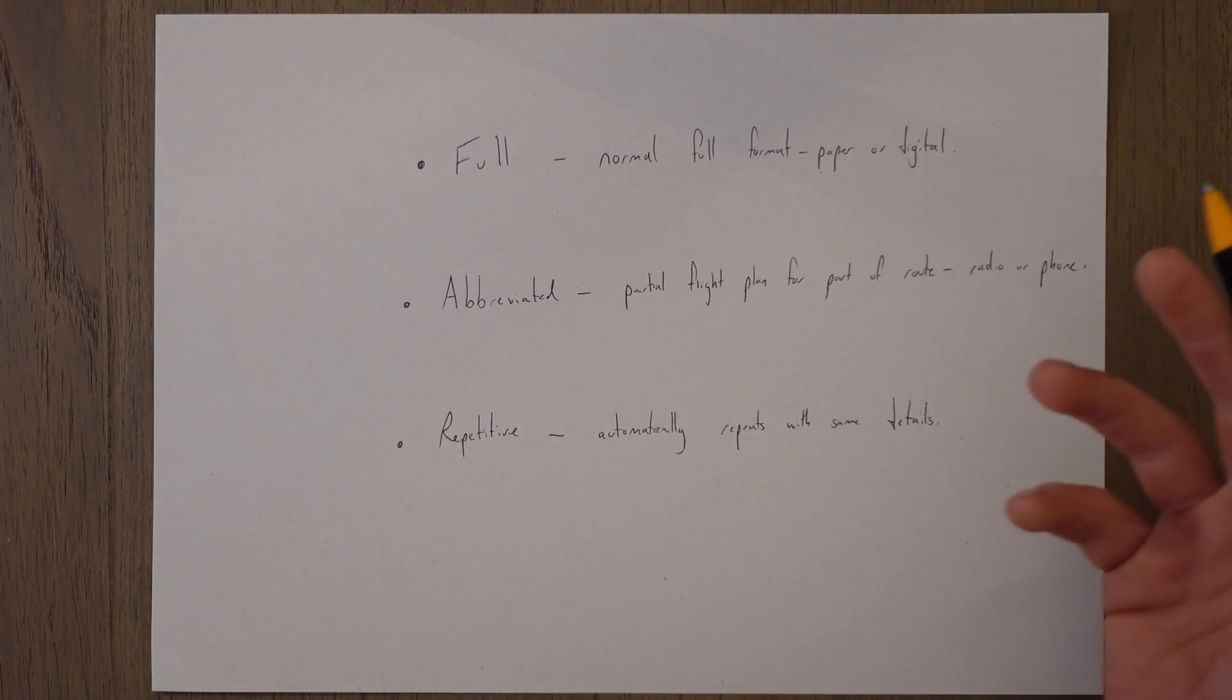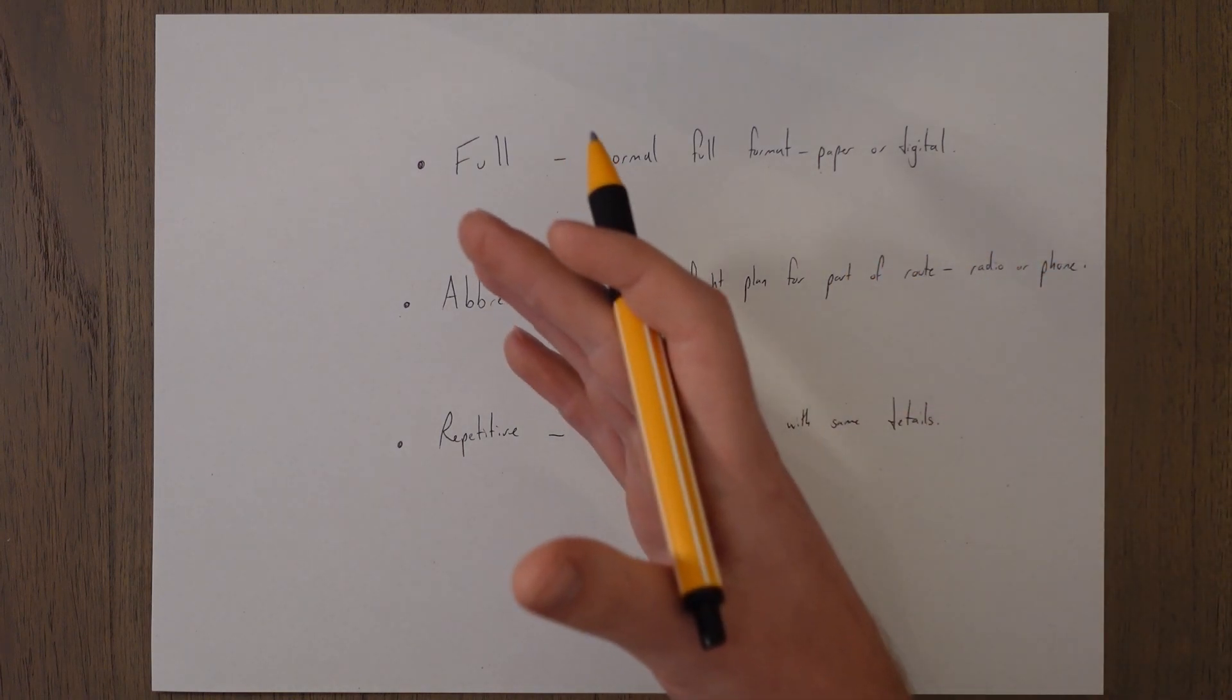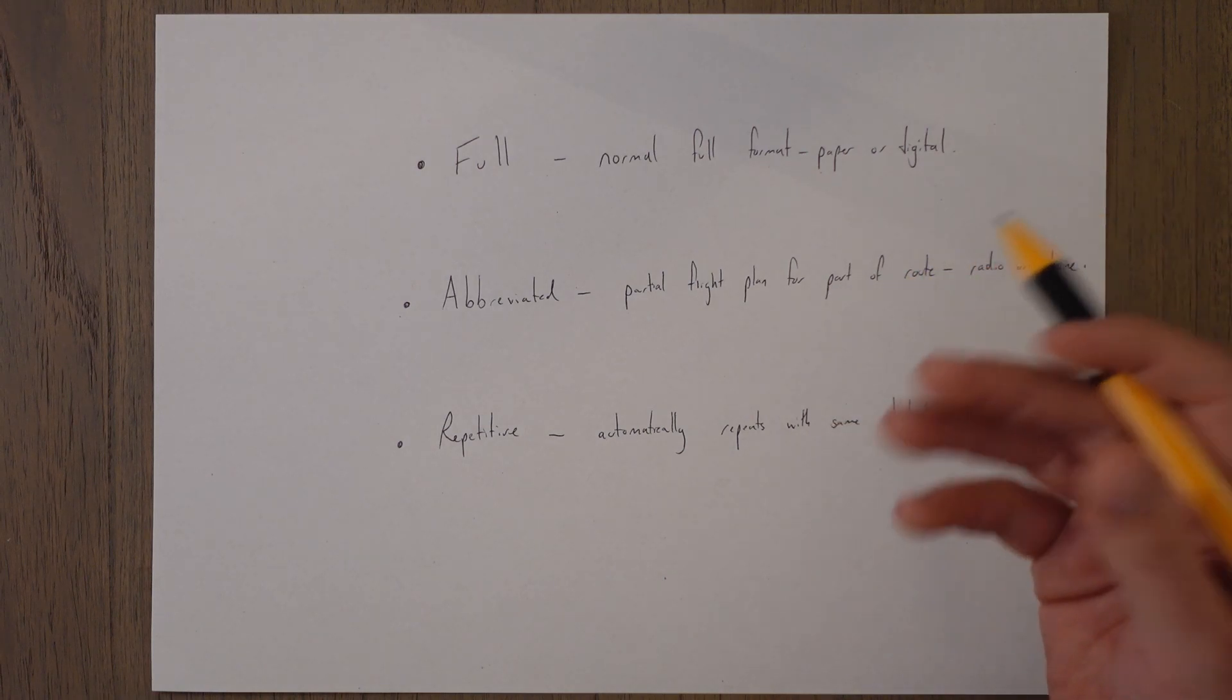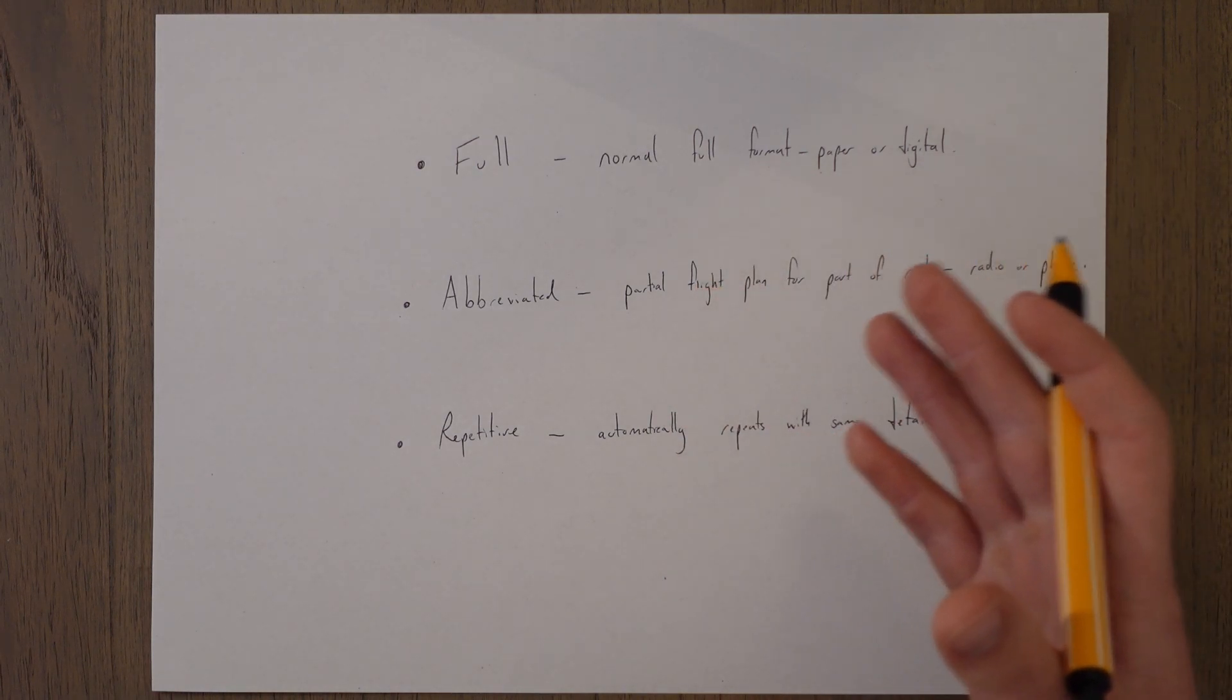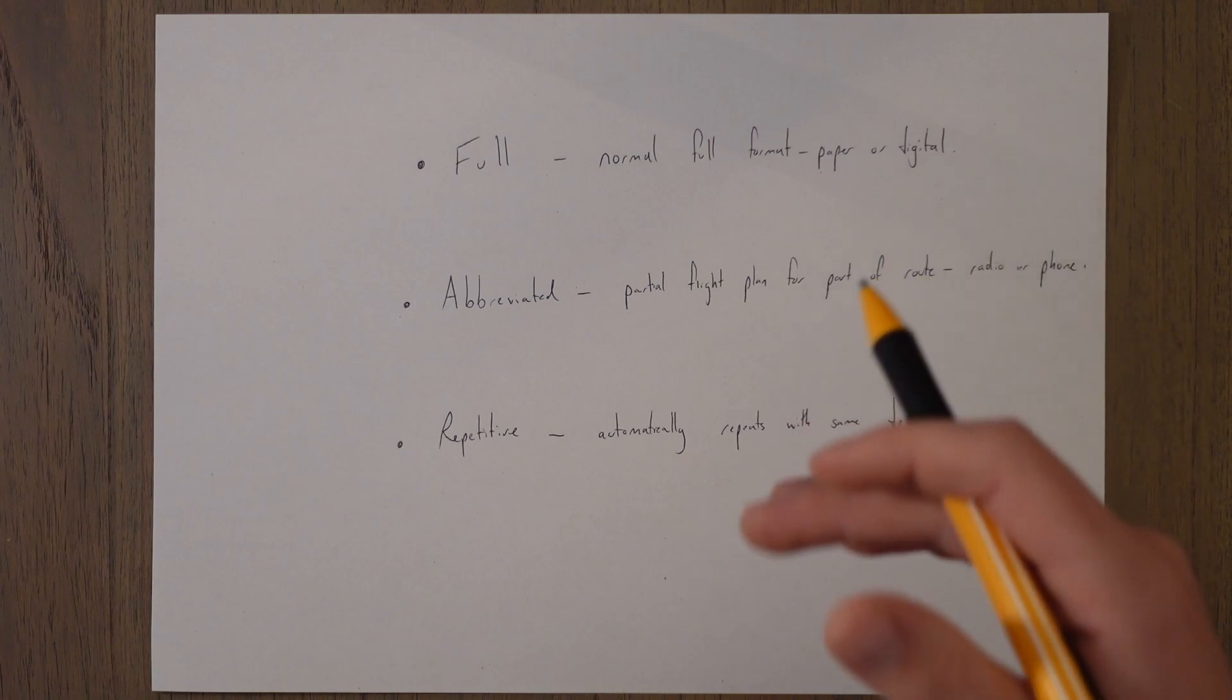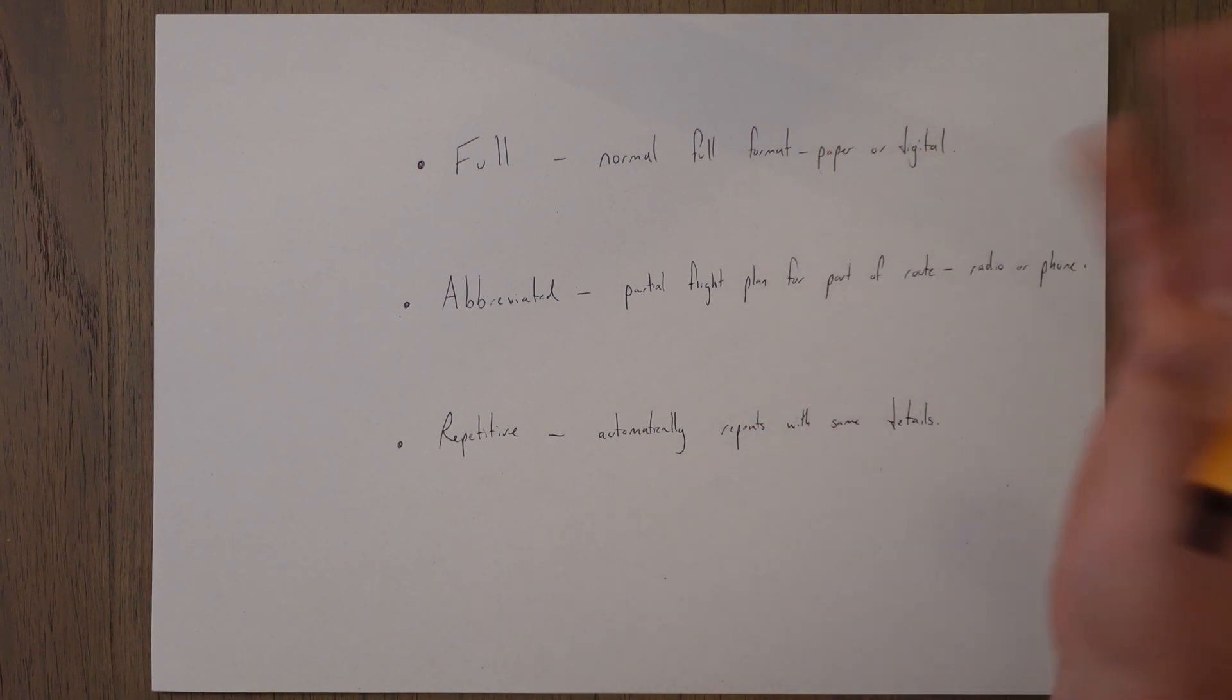The good thing about an abbreviated flight plan is you can submit it over the radio or over the phone. So you'd be in the middle of a flight and realize that your route passes through an area where you need a flight plan and you call up on the radio and say look this is my plan that I want to submit and they'll go yeah fine you're cleared to enter the zone at this time at this point for a transit and then out the other end they'll say goodbye carry on.